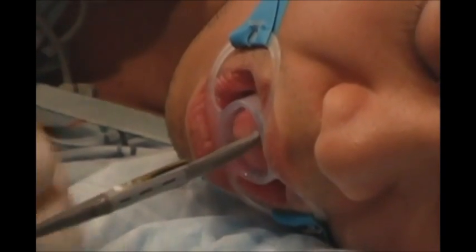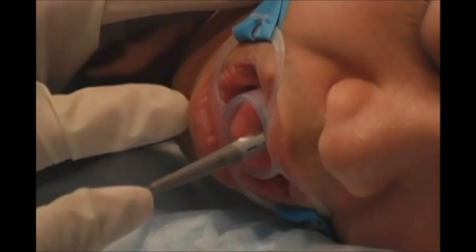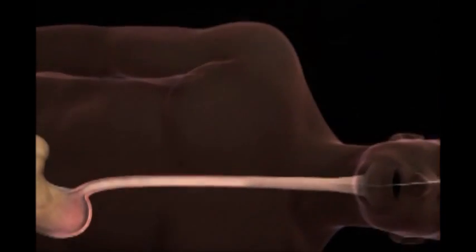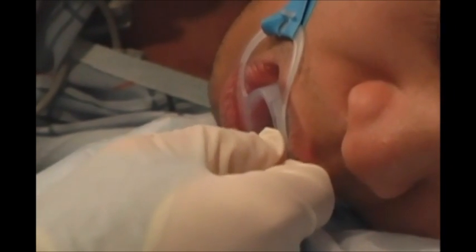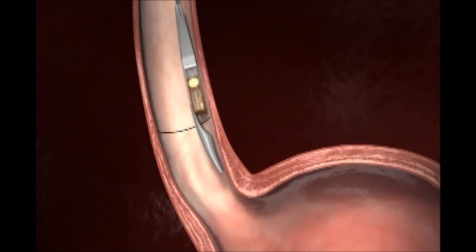After the endoscope is removed and with the vacuum pump turned off, advance the Bravo delivery system through the patient's mouth to six centimeters above the predetermined squamo-columnar junction. For proper insertion, the capsule should be facing the tongue.